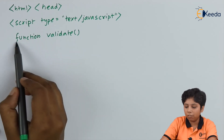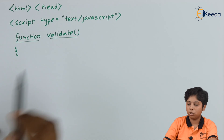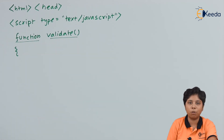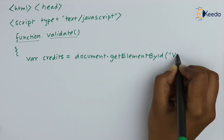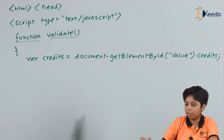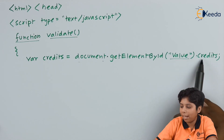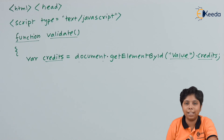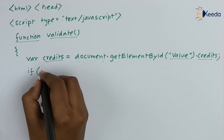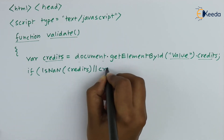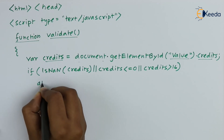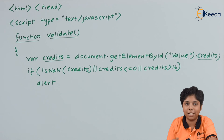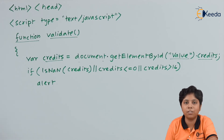We use the function keyword before any function name in JavaScript. I am using a validate function to validate data from the user side. I have used the getElementById function of the document variable to get the value of a variable called credit. We then check constraints: if credit is null, less than zero, or greater than 16 — which cannot happen for a student — the alert function is used to alert the user or display a message that something needs to be corrected.